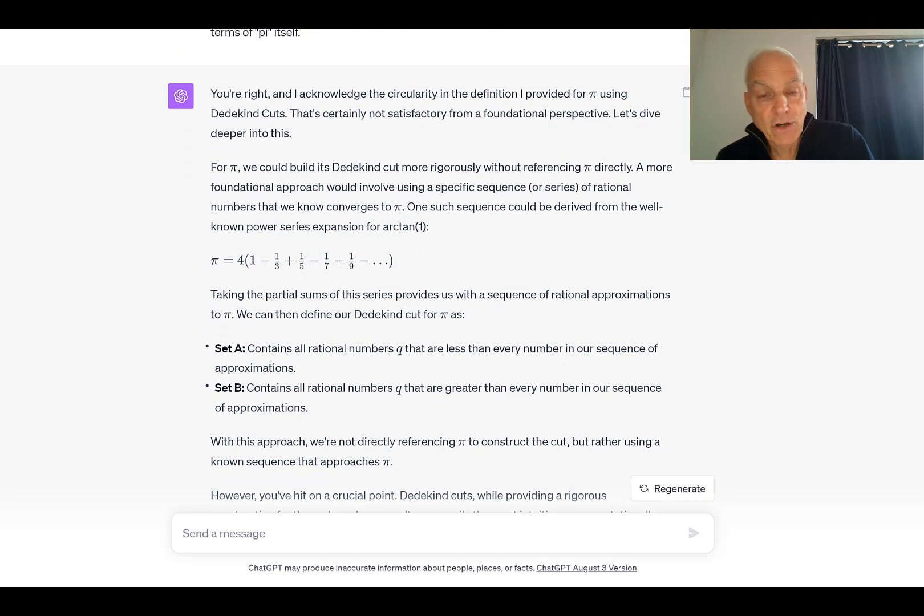Me: I am sorry, ChatGPT, but your answer is surely inadequate, even though it is probably in line with what most analysts would say, if they were pressed to actually answer the question. In reality, most of them would rather not have to answer the question, is my experience. You admit that you are defining the partition of the rationals which supposedly defines pi in terms of pi itself. ChatGPT: You're right, and I acknowledge the circularity in the definition I provided for pi using Dedekind cuts. That's certainly not satisfactory from a foundational perspective. Let's dive deeper into this. For pi, we could build its Dedekind cut more rigorously without referencing pi directly. A more foundational approach would involve using a specific sequence or series of rational numbers that we know converges to pi.